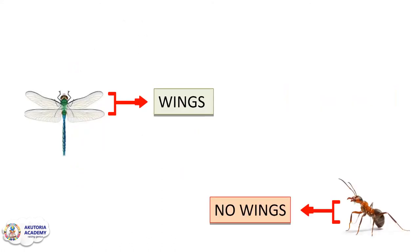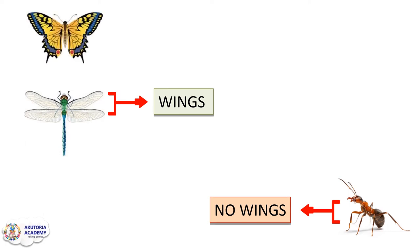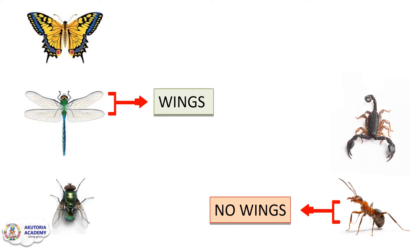We have insects that have wings. Examples include the dragonfly, the butterfly, and the housefly, and so many others. While some other insects don't have wings — for example, ants, scorpions, and spiders don't have wings. So we have insects that have two, three, or four wings, while we also have insects that don't have wings at all.